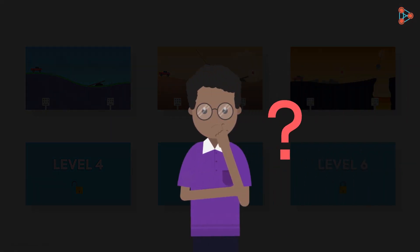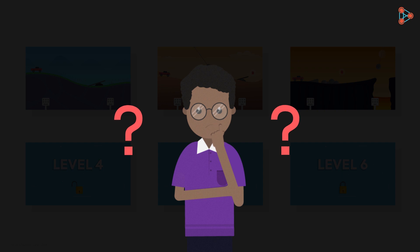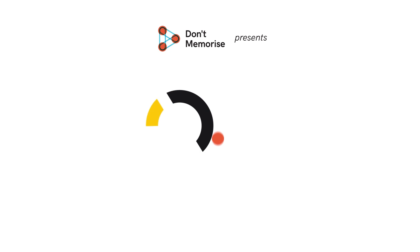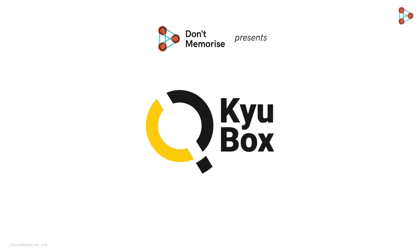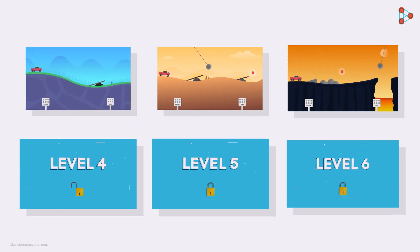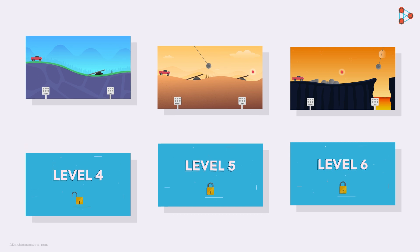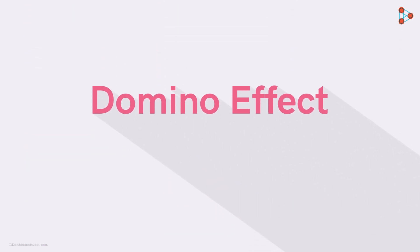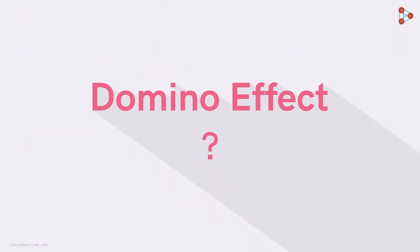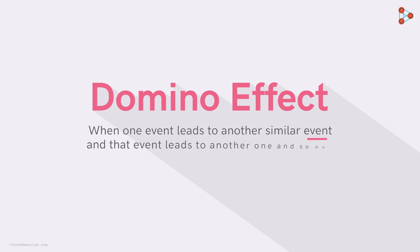What actually happened here? Let's find out! The entire scenario is an example of the domino effect. In simple words, when one event leads to another similar event, and that event leads to another one and so on, then such a phenomenon is called the domino effect.